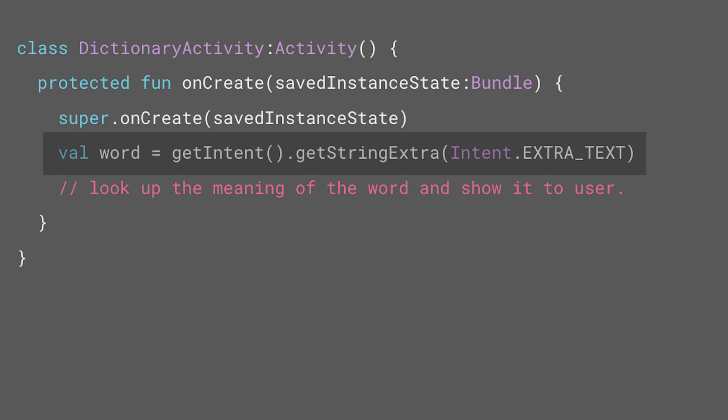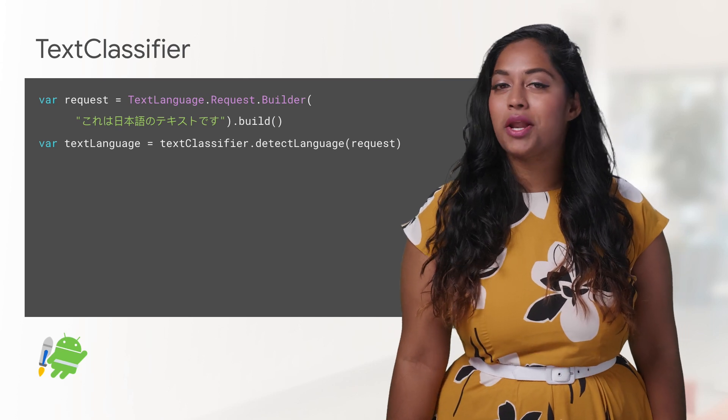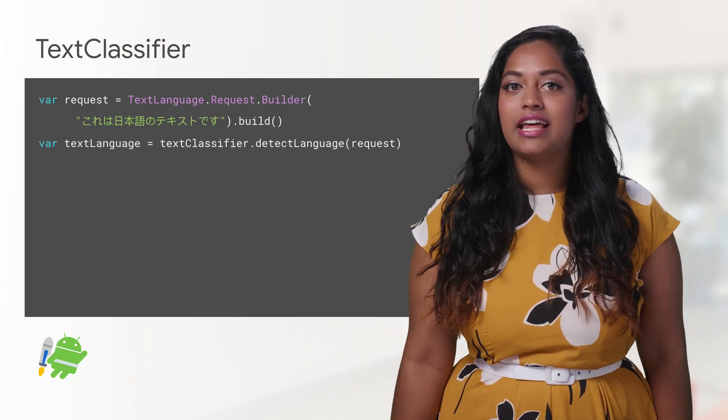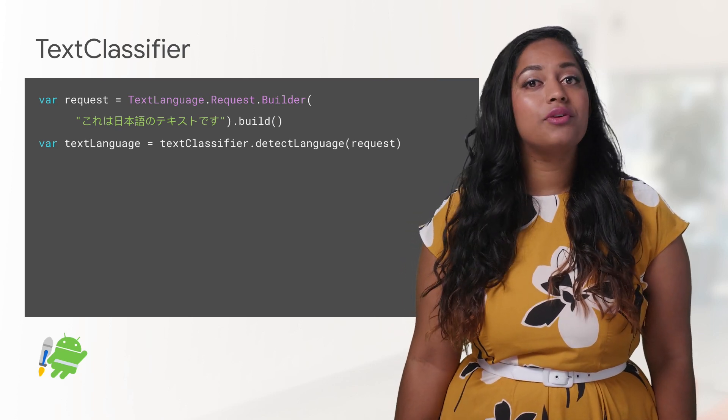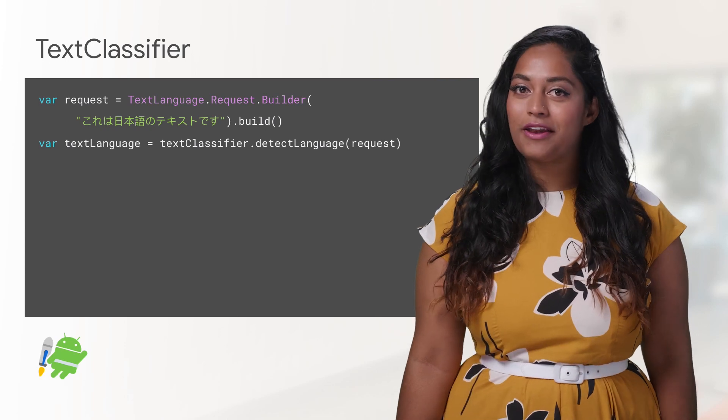Third, you will be able to present your app's definition or translation through your activity. The Language Detection API helps you identify what language your users are using from over 120 supported languages. It also uses an on-device model. To use this feature, pass a request on a background thread to the API, including the foreign text, and the response will contain the corresponding language.